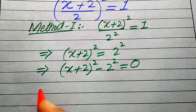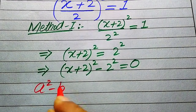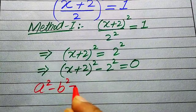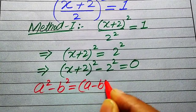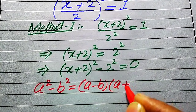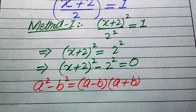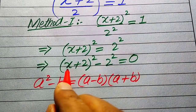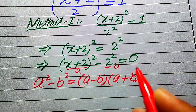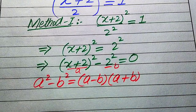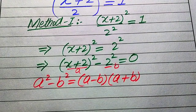Now we use the algebraic formula: a² minus b² equals (a minus b)(a plus b). Here the base of the first term is our a, and the base of the second term is our b.